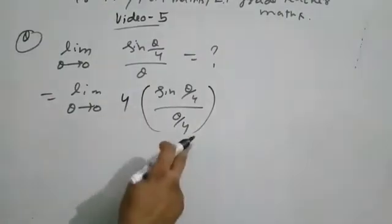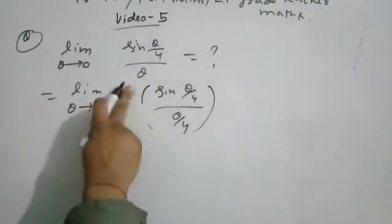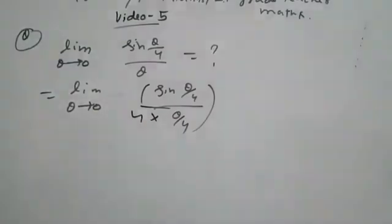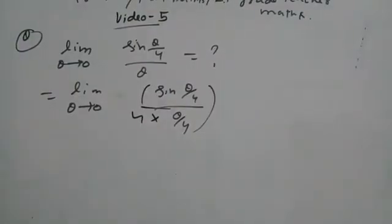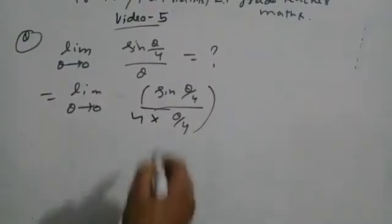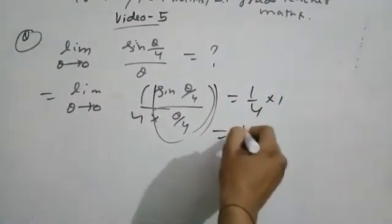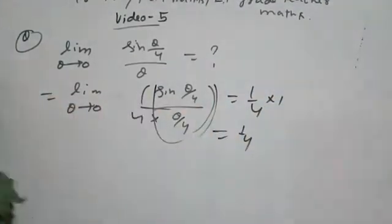Multiplying and dividing, we get (1/4) into sin(θ/4)/(θ/4), which gives (1/4) into 1, so the answer is 1/4. Next question.